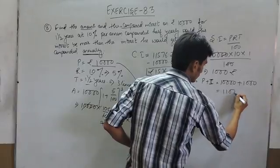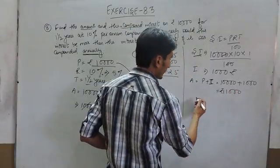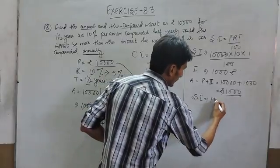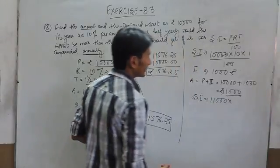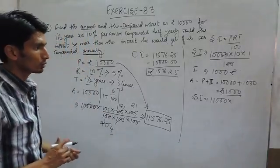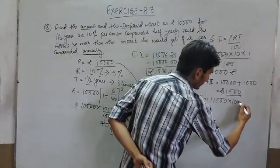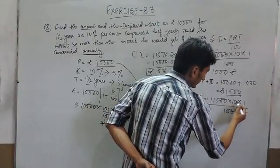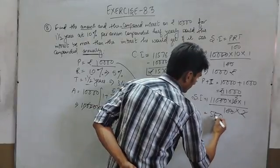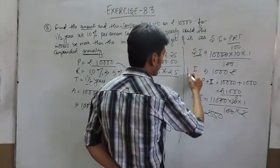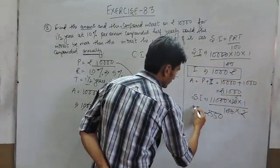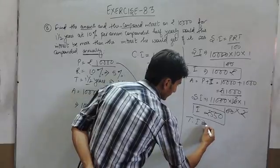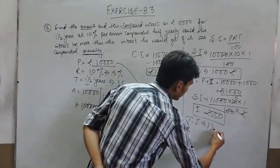Now we know that after that, the amount will become principal plus interest. The principal is 10000 and interest is 1000. So this new amount will act as a principal for the remaining period of time. Using the SI formula again for the remaining half year period, the interest will be 550. So the total interest if the interest is payable annually will be 1000 + 550 = 1550 rupees.